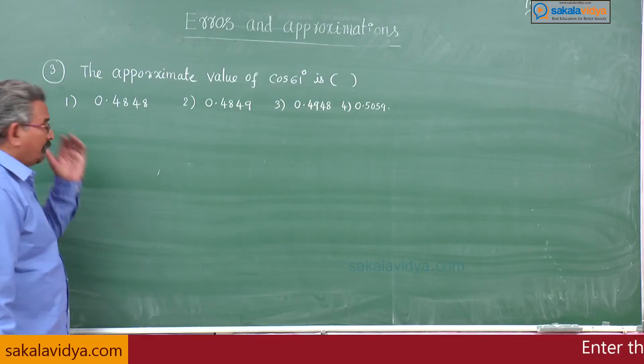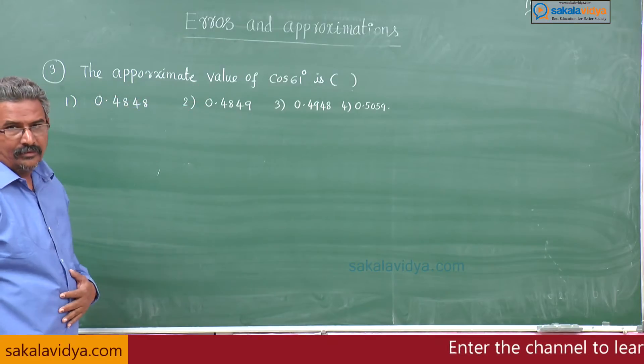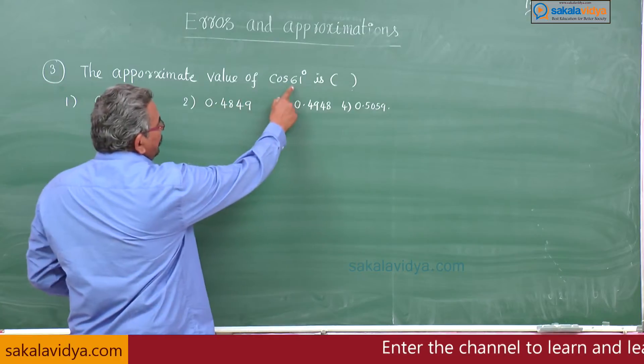Let us come to the third problem. The approximate value of cos 61 degrees is: